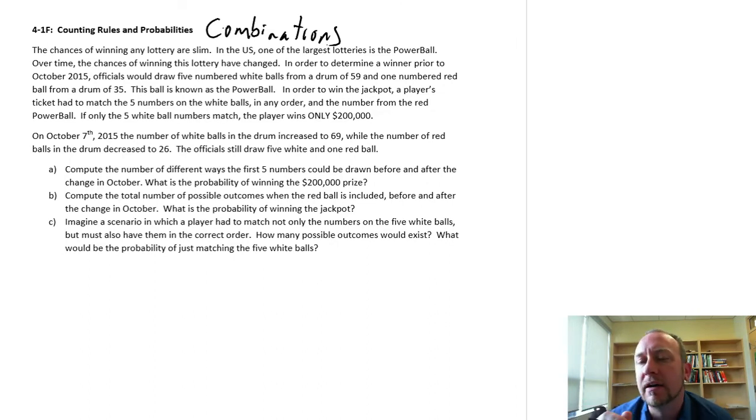The order doesn't matter. So if they draw a 5, 6, and a 7, it doesn't matter if on your ticket it says 5, 6, or 7, or maybe on your ticket it says 6, 7, and 5, you're still a winner. You're not trying to match the order, you're just trying to match the numbers.